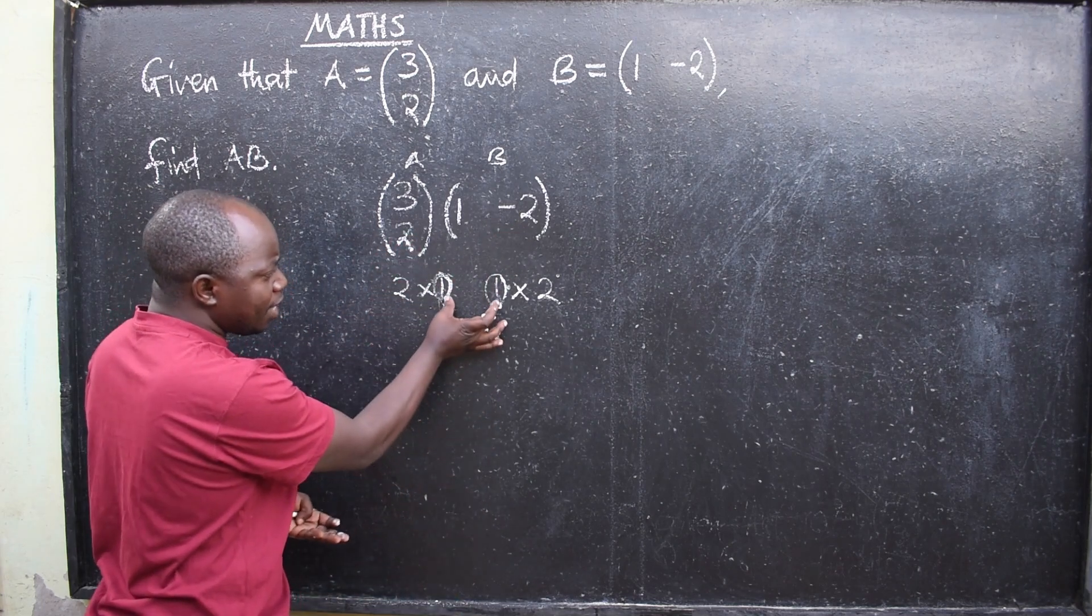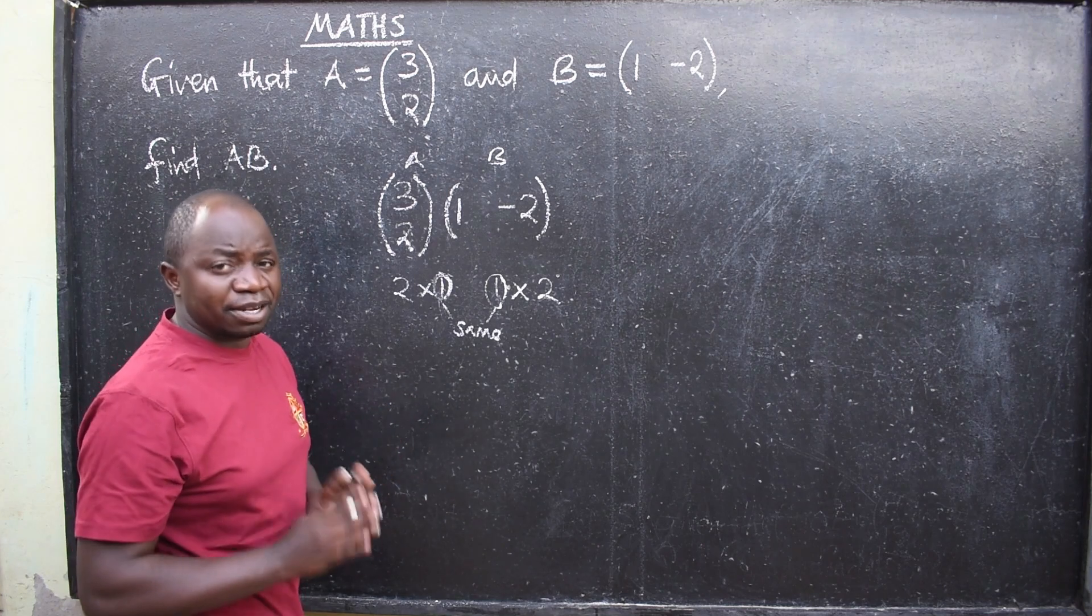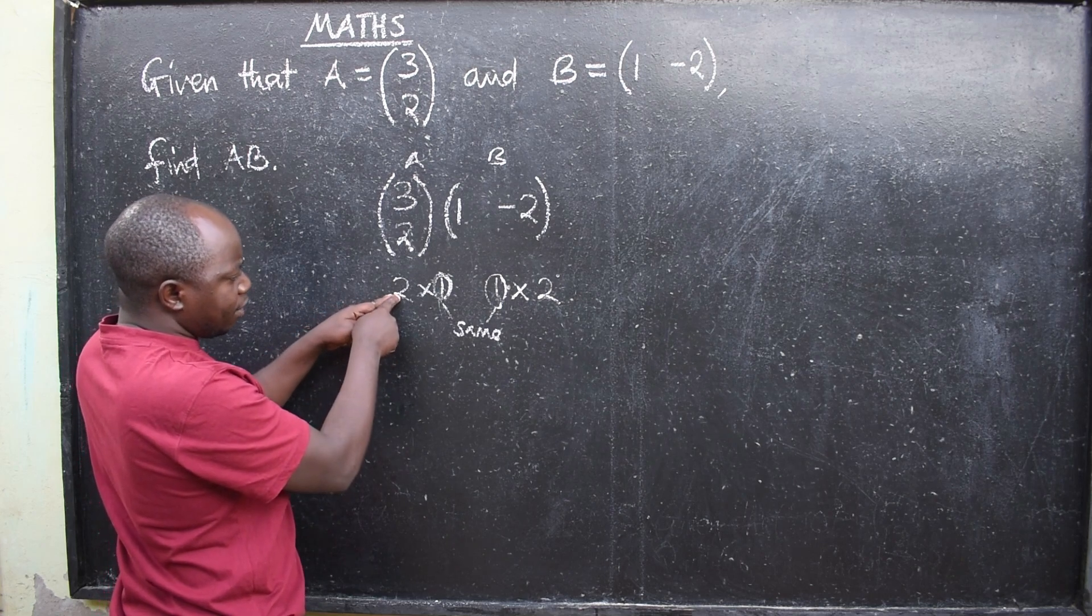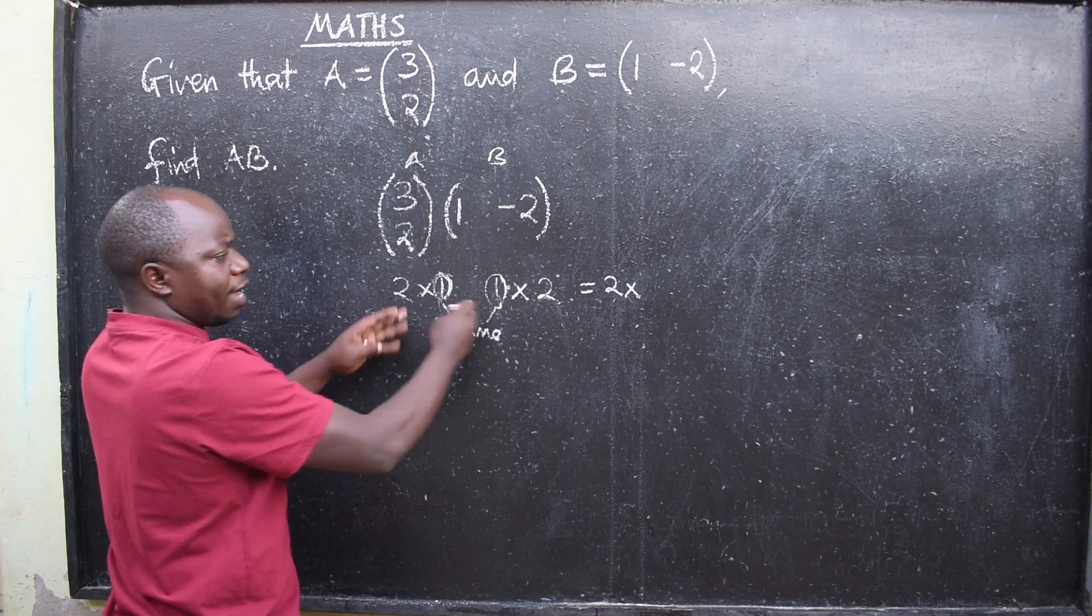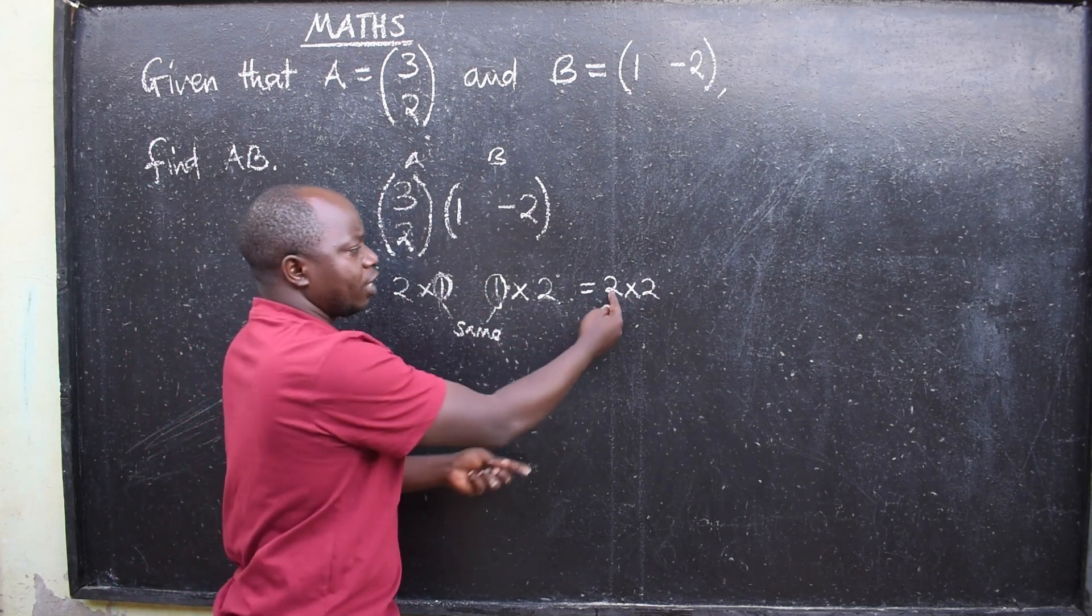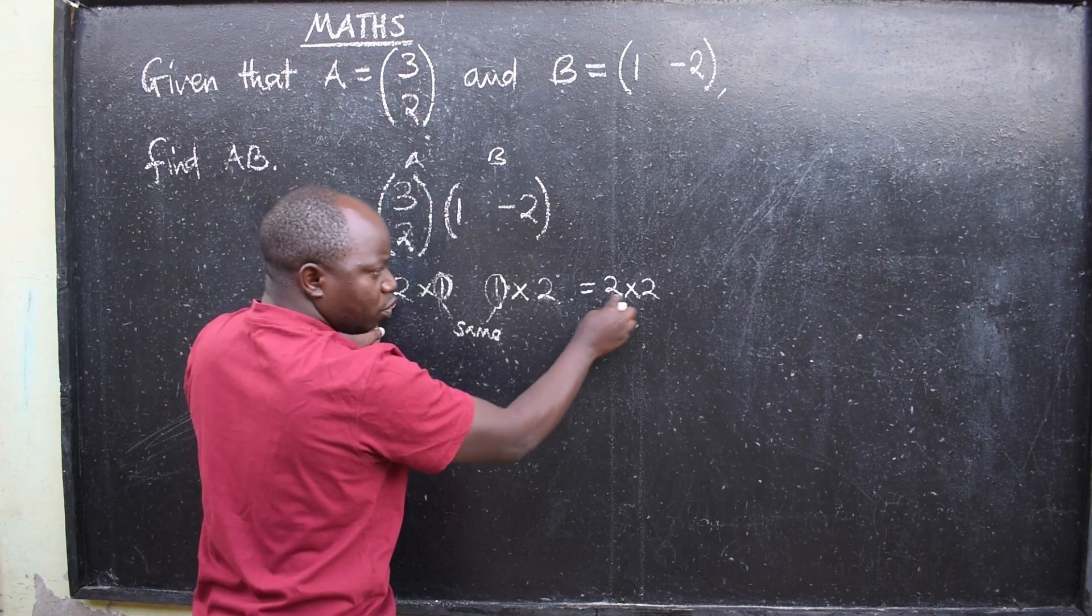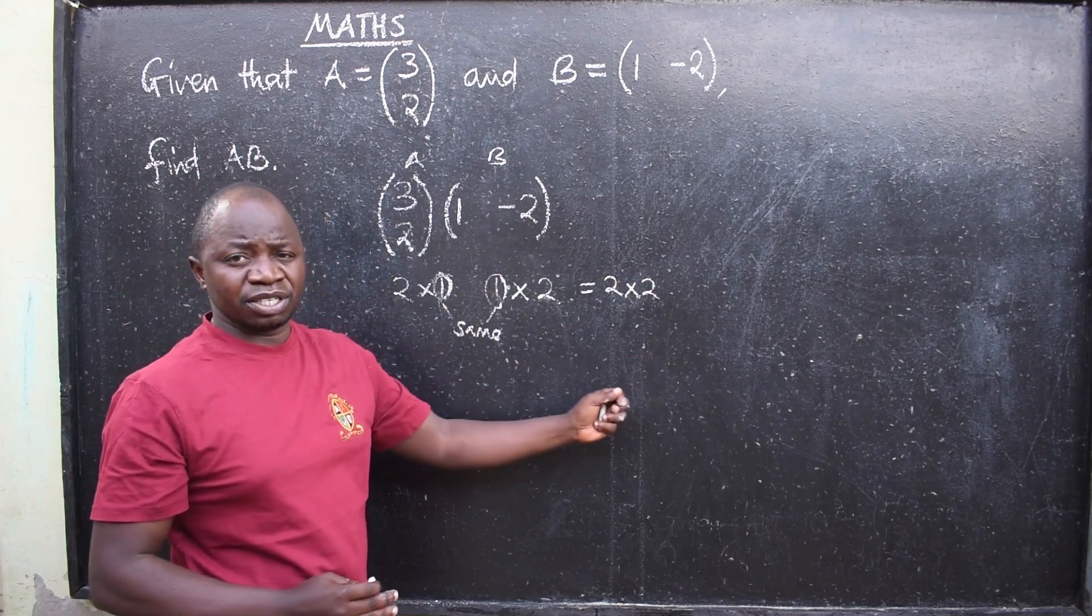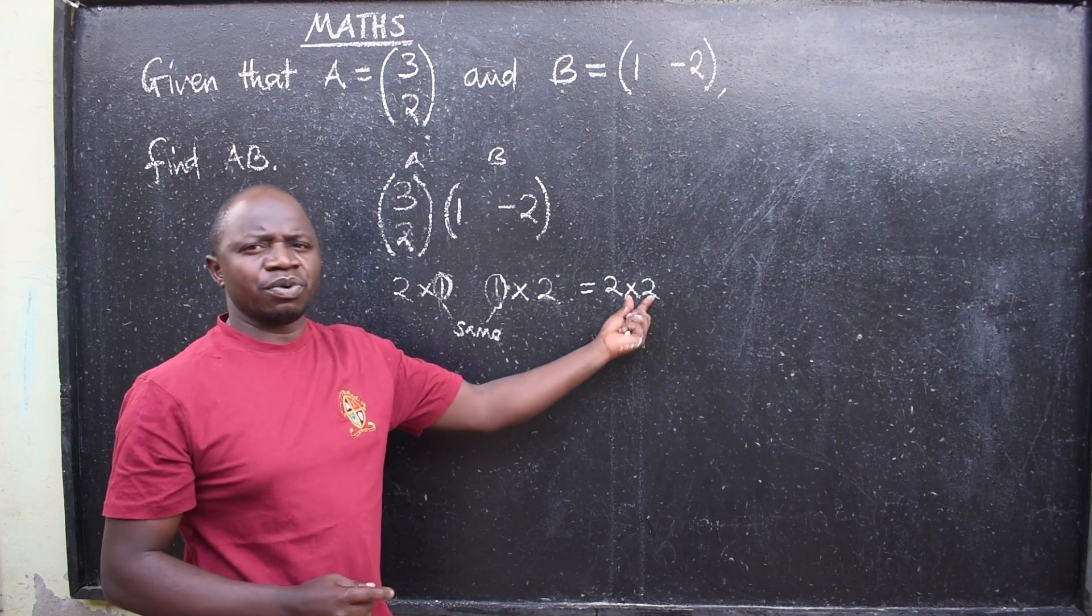Why? They are telling you that the two matrices can be multiplied. If they are different here, it means you can't multiply those matrices. What about the remaining numbers? The first one and the last one are telling you that when you multiply, the order of the answer will be 2 by 2. When we multiply this, the order of the matrix should be 2 by 2.